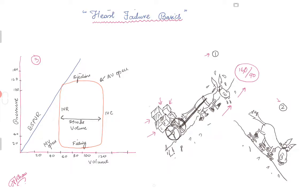The donkey is also carrying a cart full of boxes — these represent the preload. The more the preload, the more the donkey has to work, and the more tired it gets. Similarly, in the heart, if the patient is congested with increased volume and venous stasis, there is more preload on the heart and more pressure on it.